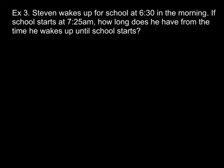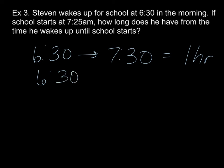All right. Steven wakes up at school, for school, at 6:30 in the morning. If school starts at 7:25, how long does he have from the time he wakes up until school starts? So if I was tackling this problem, I would go, all right, so between 6:30 to 7:30 equals one hour, right? Well, I'm looking at between 6:30 and 7:25. So then really all I have to do is figure out what's the difference between 7:25 and 7:30, which is five minutes. So this time, then, is five minutes less, which would be 55 minutes.